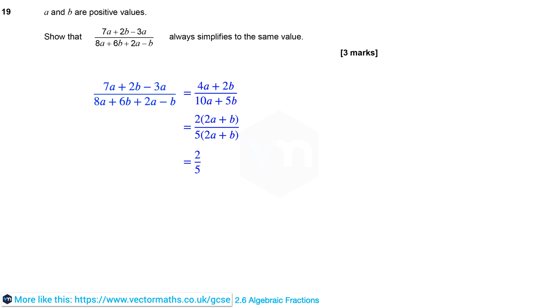Now we can actually factorise the top and the bottom. If we take 2 out of the numerator that's 2 into 2a plus b. And if we take 5 out as a common factor with the denominator that's 5 into 2a plus b.